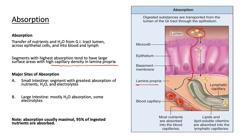The major sites of absorption are the small intestine and large intestine. The small intestine handles nutrient absorption, water absorption, and electrolytes. The large intestine handles mostly water and some electrolytes. Absorption along the GI tract is nearly maximal — on average 95% of ingested nutrients are absorbed. Carbohydrate absorption is very high at around 98%, followed by fats at around 95%.